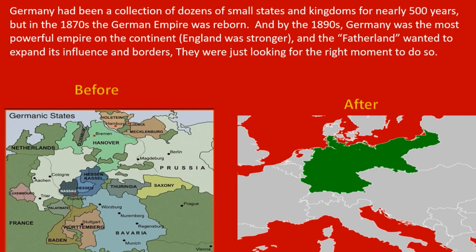Germany was not a country before 1870. It was made up of several small states, kingdoms, and provinces — pretty much that way since the end of the Holy Roman Empire, about 500 years. In the 1870s, the Germans, led by Otto Bismarck, basically created the German Empire. Within about 20 years, Germany went from being a bunch of little kingdoms to being the most powerful country on the entire continent of Europe — England was more powerful, but England's not on the continent.